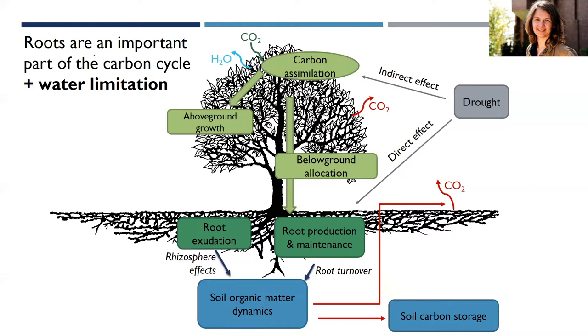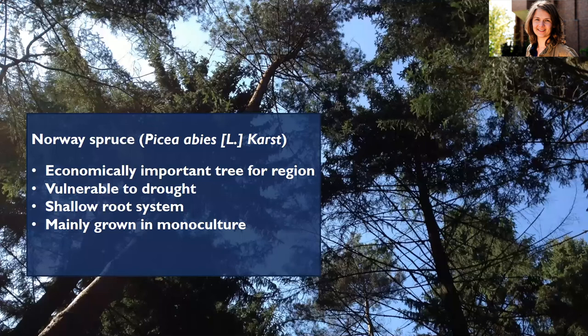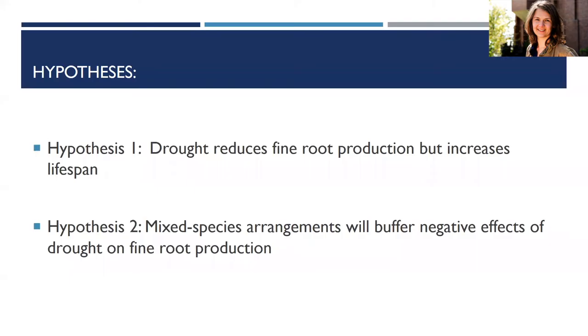Studying the effect of droughts in temperate forest ecosystems is important because the duration, frequency, and severity of drought is predicted to increase, even in areas where trees are usually not water-limited. One of the most economically important trees for foresters at TU Munich is Norway spruce, which is particularly vulnerable to drought, partly due to its shallow root system. An additional question is what forest management strategies could mitigate these negative effects.